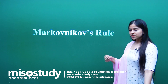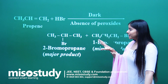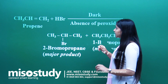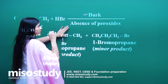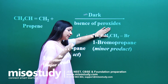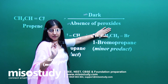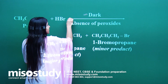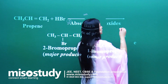So Markovnikov's rule — named after the scientist who discovered it. Now basically, always remember two very important things: Markovnikov's rule happens in the dark, and it happens in the absence of peroxides. Any kind of peroxide can be taken; usually benzoyl peroxide is taken. But for Markovnikov's rule, always remember it occurs in the absence of peroxide.